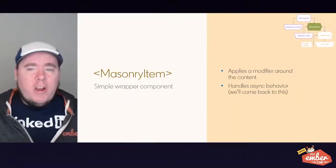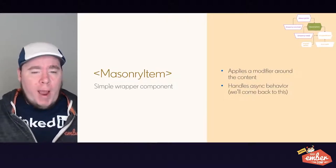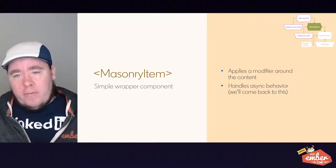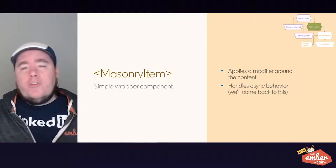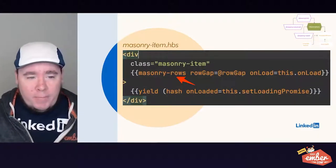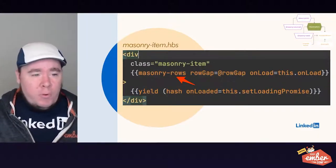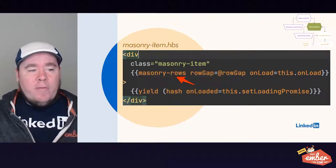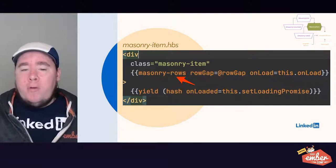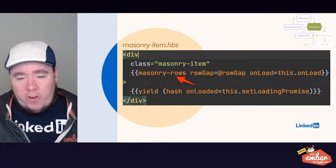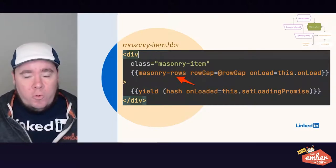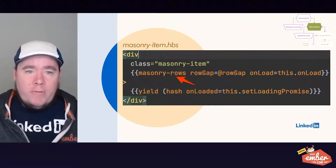Let's look at our masonry-item component, which is really just a simple wrapper around the user's content. It applies a modifier to that wrapper and handles some async behavior. The template is very simple — it applies the masonry-rows modifier on our wrapper div, passing in the row gap and a promise which handles the async behavior. It also yields out an action to the consumer that gets used for the async behavior we'll cover next.